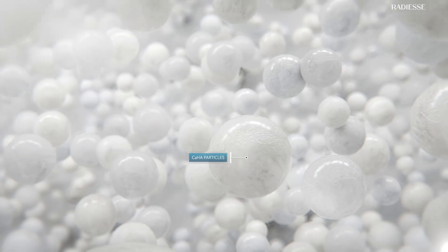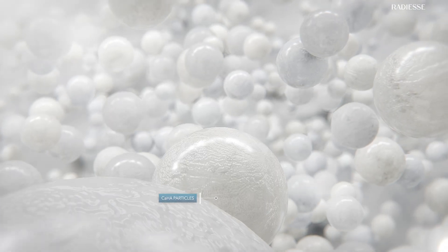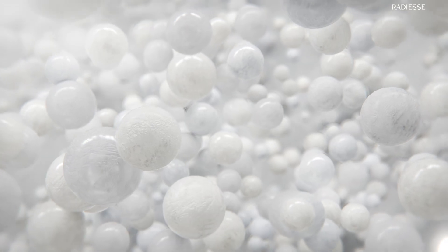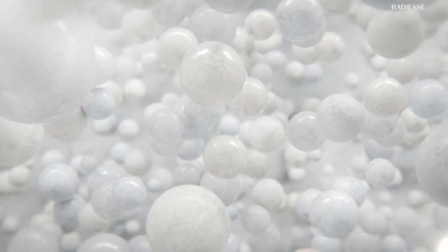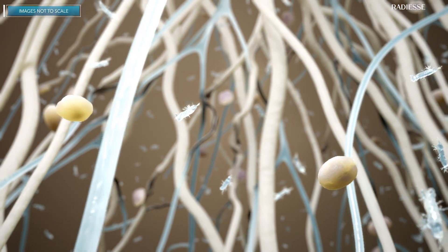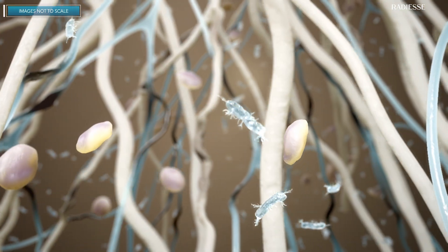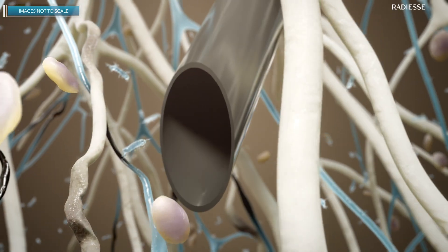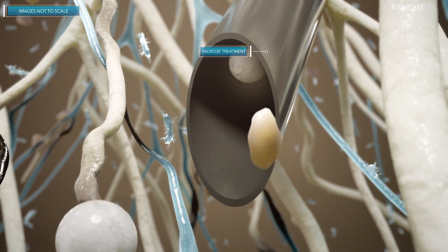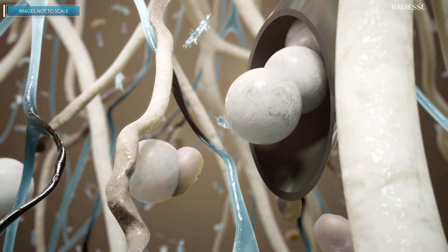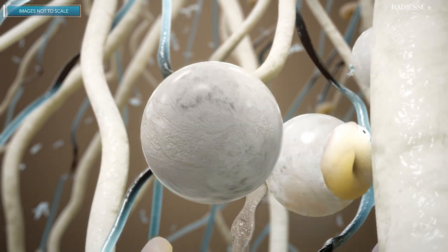Radiesse contains calcium hydroxylapatite (CAHA) microspheres in a carboxymethylcellulose gel. Radiesse's unique particle design creates the foundation of a true regenerative response, restoring the contact and tension of dermal fibroblasts and acting as scaffolding in the ECM.